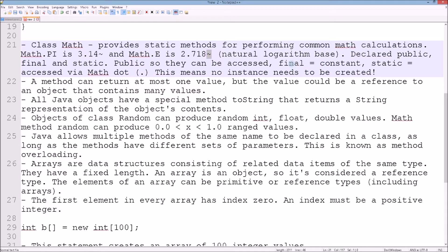Public so that it can be accessed from anywhere, final because it's a constant - the value will not change, and static because it can be accessed via Math.E or Math.PI. This means we don't need to create an instance of these variables within our program and we can just call them by Math.PI, Math.E.